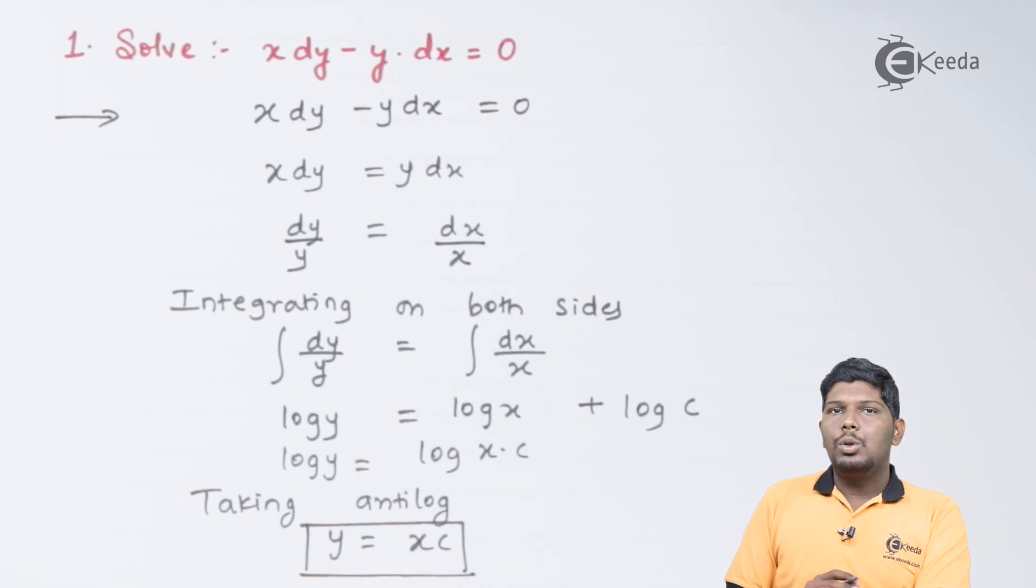And this becomes the solution of the given differential equation. Remember, friends, whenever we have a constant in the solution, that solution is called as a general solution. If we find a value of c, then it becomes particular solution.